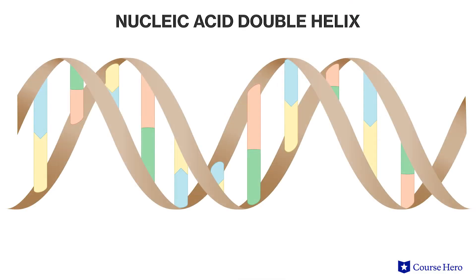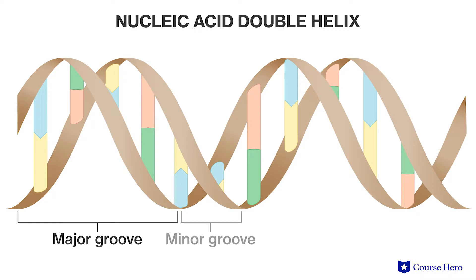If you imagine a ladder that has been twisted at the top and the bottom, you'll get a pretty good idea of what DNA looks like. Its structure is described as being a double helix, and it is twisted to the right to form both major and minor grooves.